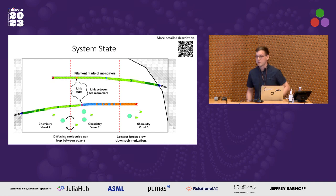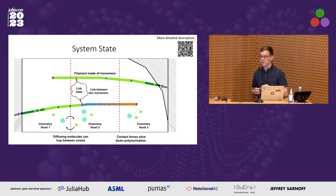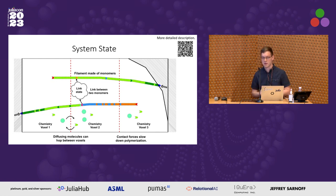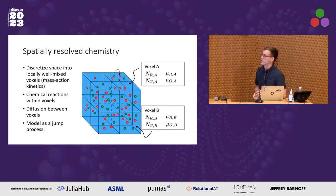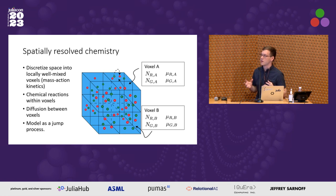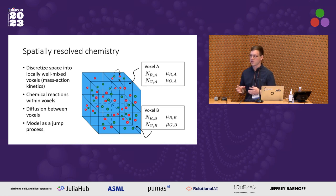Now I'll go into the details of how we actually run these simulations. This is an overview of the state of a median simulation. We have filaments composed of individual monomers, which can each be in a chemical state, and then we have links between these filaments. We also discretize space into chemistry voxels, and in each voxel we keep track of the number of various chemicals. We assume each voxel is well-mixed, so we can use mass action kinetics, simulating chemistry in each voxel separately and allowing chemical species to diffuse between voxels. This whole system can be modeled as a jump process.